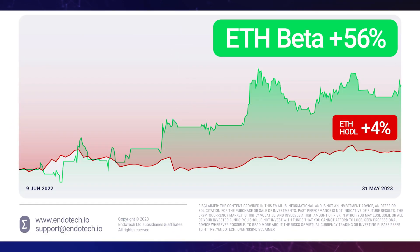Endotech AI solved this problem for you, taking emotions, time, and experience out of the equation. Our market-proven algos have produced 56% since last June, while dollar cost averaging produced 17% — that's more than double the return. And compared to buying and holding, which returned only 4%, we are nearly 20 times better than that return.